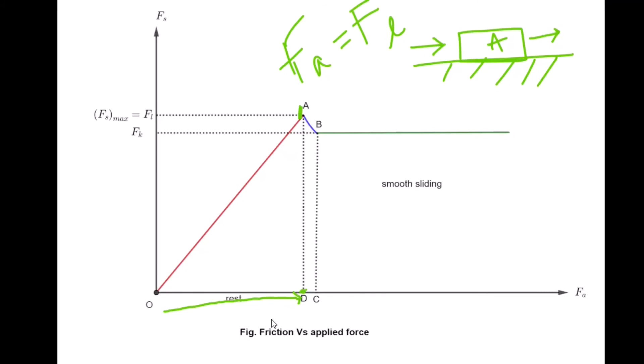When the body starts to move, there is kinetic friction. This is kinetic friction, and this is static friction. The kinetic friction is less than the maximum static friction.